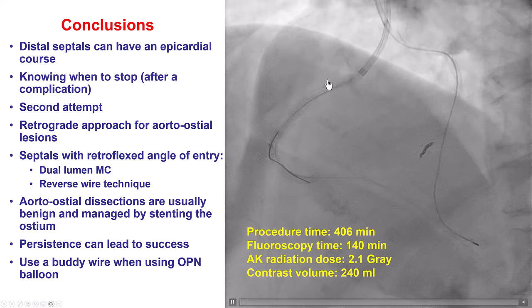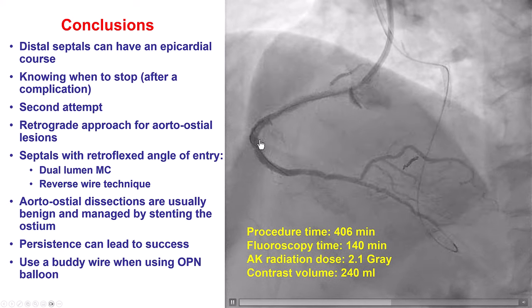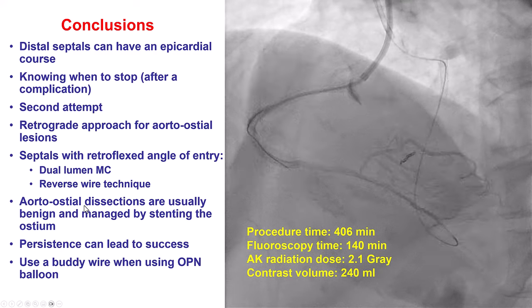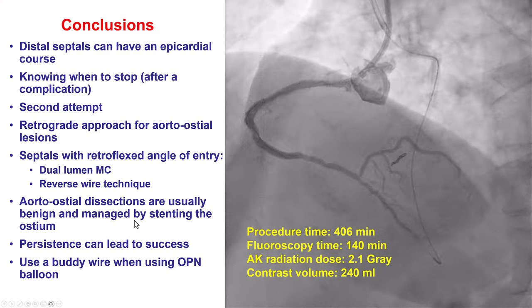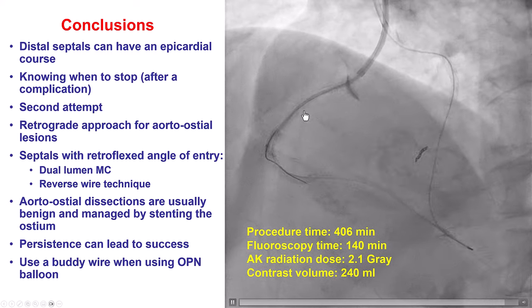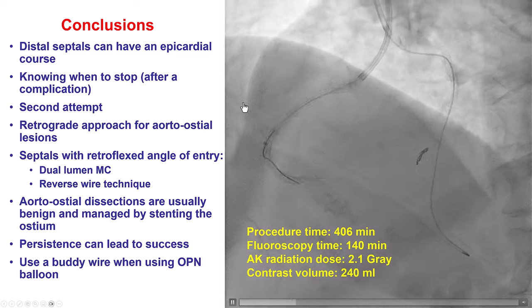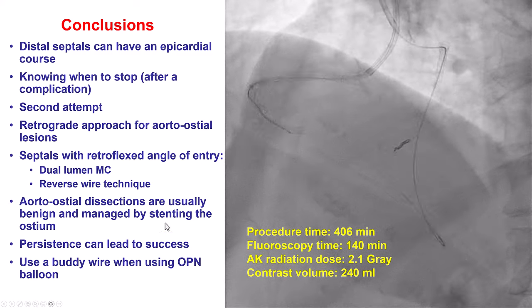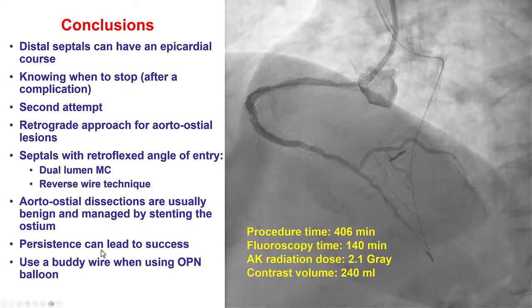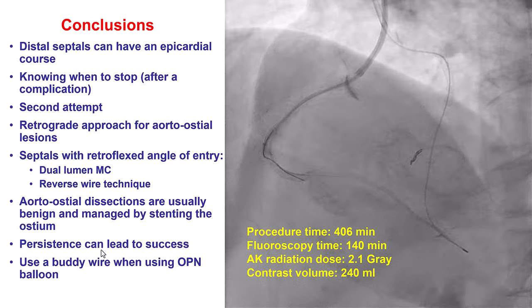One should be careful with injections after a dissection — that is why we injected through the guide extension positioned well down the vessel, not from the guide itself. Persistence is key for being successful. When using a very high-pressure balloon, it can sometimes get stuck over the wire, so it is best to use a non-coated wire such as the Grand Slam wire and to have a buddy wire in place so that if the OPN balloon gets stuck, one does not have to remove the wire but can pull the balloon out while keeping another wire in place. Thank you.